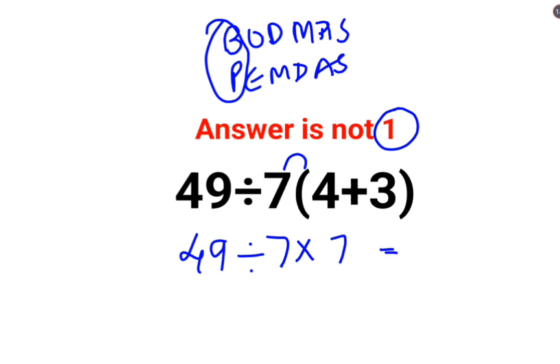Now at this point, a lot of people thought that this can be written as 49 divided by 7 into 7, which gets you 49 again. Then 49 divided by 49 is going to get you the answer as 1.